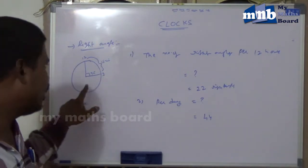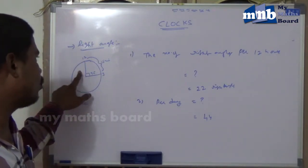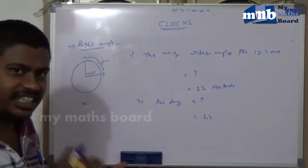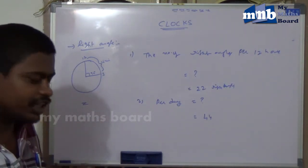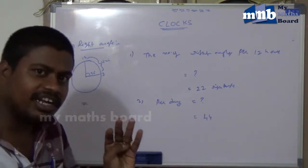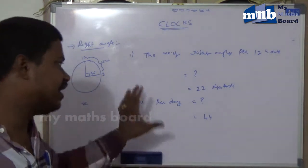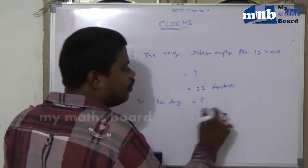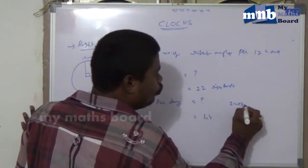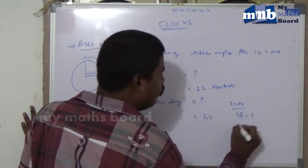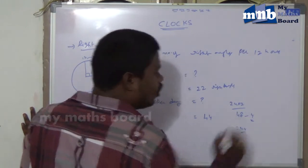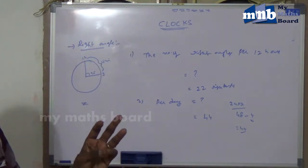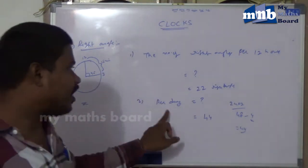We face three o'clock and nine o'clock twice per day — morning three, morning nine, afternoon three, and evening nine — so four common right angle positions are faced per day. According to our theory, per day: 24 into 2 is 48, minus 4 equals 44. These four common right angle positions are three o'clock and nine o'clock, occurring twice each.